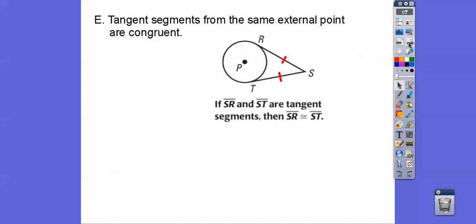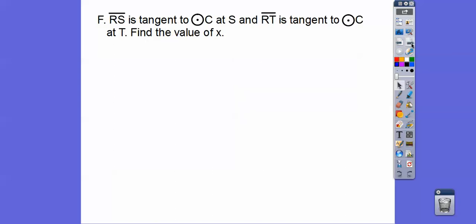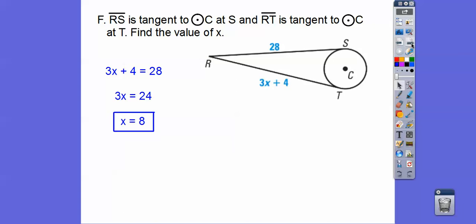All right, so tangent segments from the same external point are congruent. So here's my external point right here. So this tangent segment is the same length as this tangent segment right there. All right, so if segment RS is tangent to circle C at point S, and segment RT is tangent to circle C at T, find the value of X. Remember that last theorem, tangent segments from the same external point are congruent. So we set them equal, subtract, solve, and we get X equals 8.